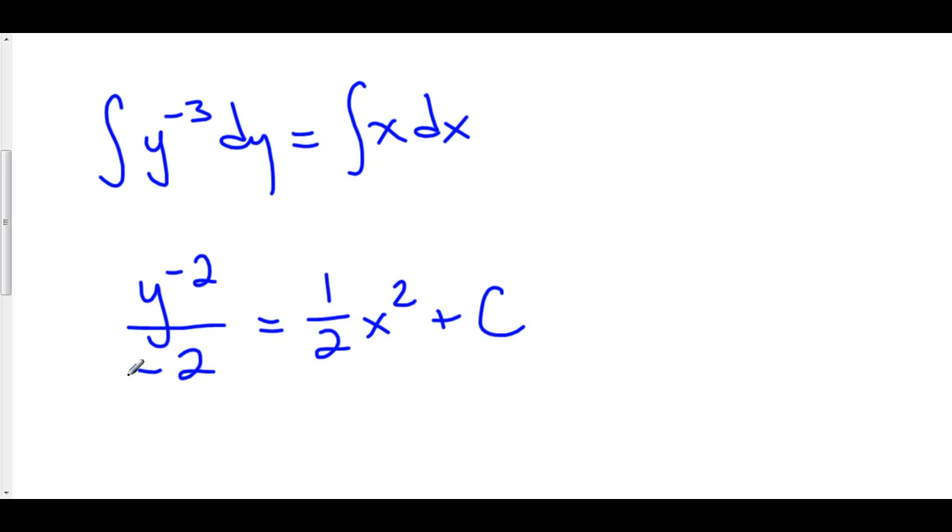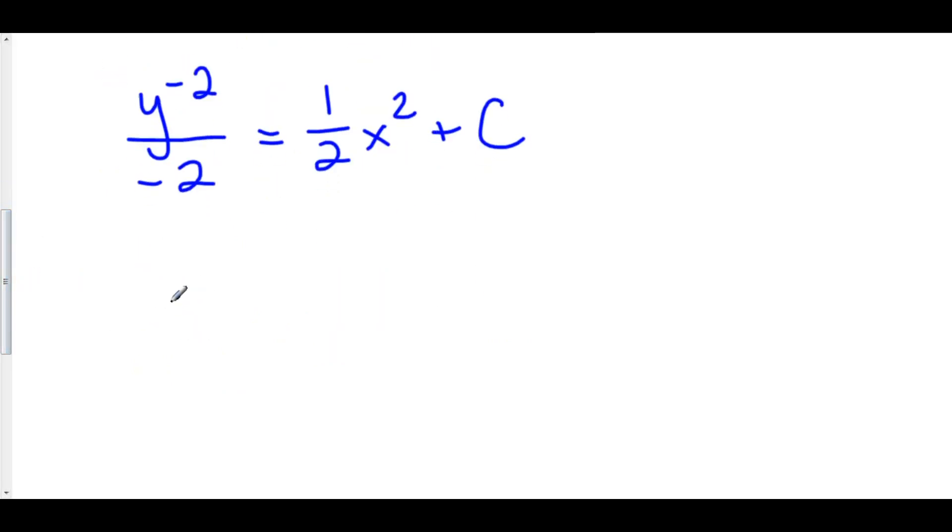At this point we could either plug in our initial condition in order to find c but I find it easier to try to get my y value isolated before doing that. So let's multiply everything by negative 2. So here we have y to the negative 2 is equal to 1 half x squared times negative 2 is negative x squared and our constant c times negative 2 is just some new constant c.